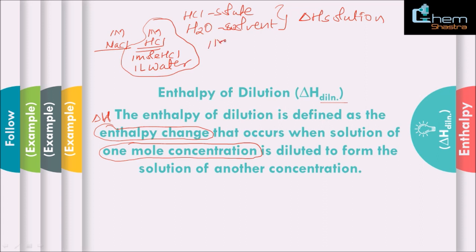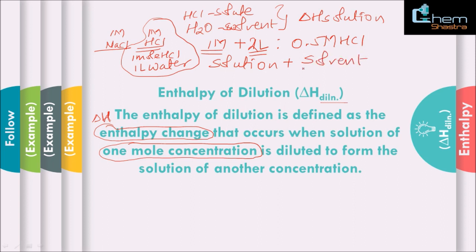Now take this one molar solution of HCl and change its concentration. Suppose I add an extra one liter of water. We already had one liter, so now we have two liters. The one molar concentration will change to half — that is, a 0.5 molar HCl solution. So when you already have a solution and you dilute it by adding extra solvent, the enthalpy change associated with that process is called the enthalpy of dilution. Until you have a solution, you cannot study dilution. You must have a solution first; then adding extra solvent causes dilution, giving a change in enthalpy.